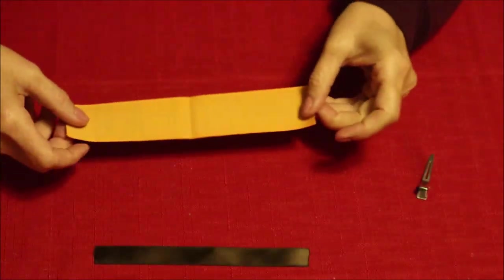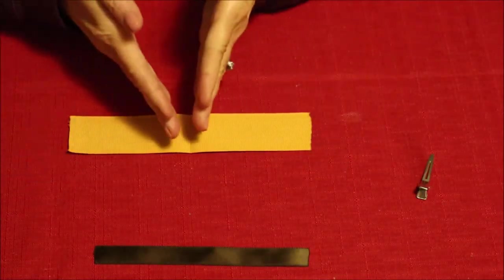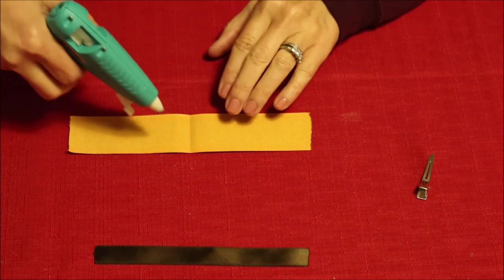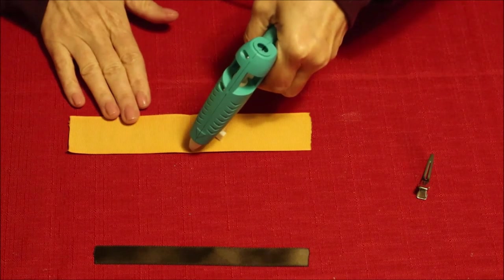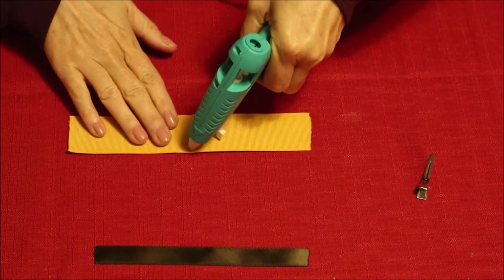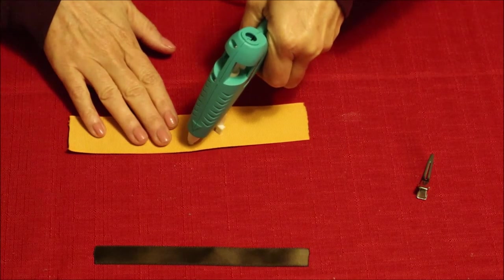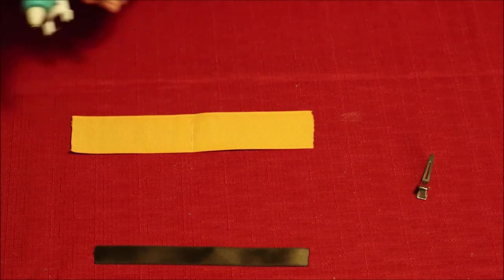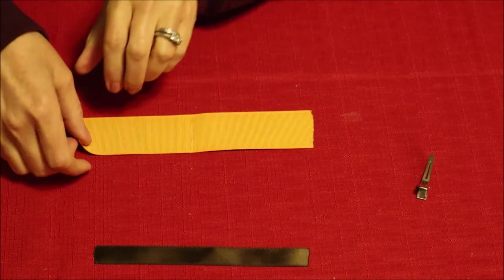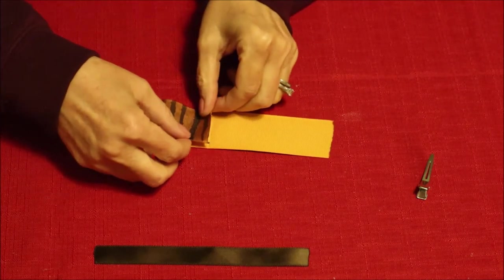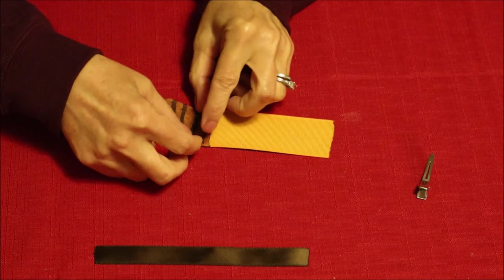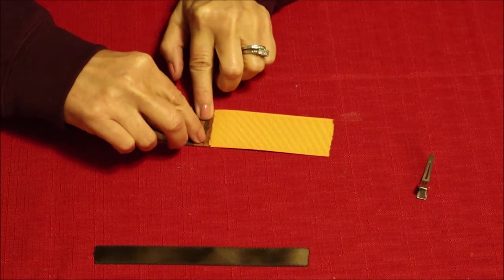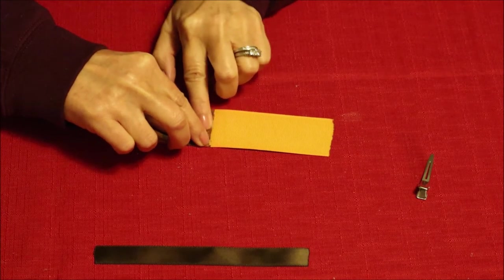This lets us know where our ends need to come to meet. So you're going to put a little bit of glue down the center line that you just created and bring your first end over to the center and let that stick there.